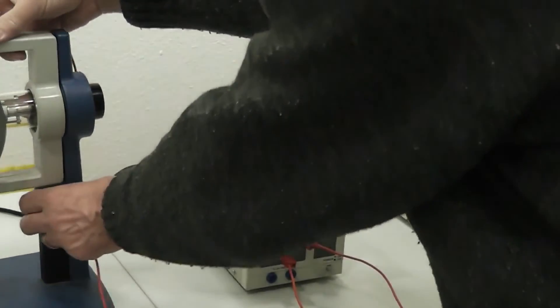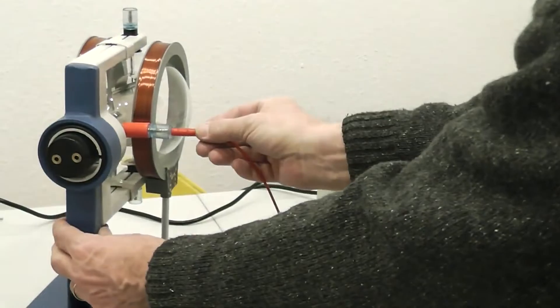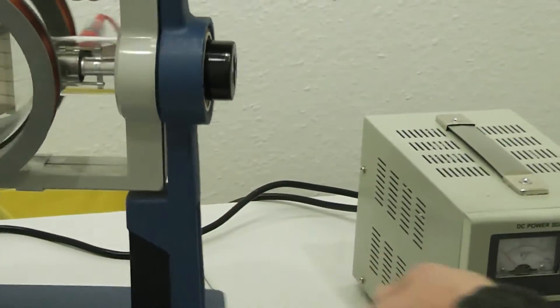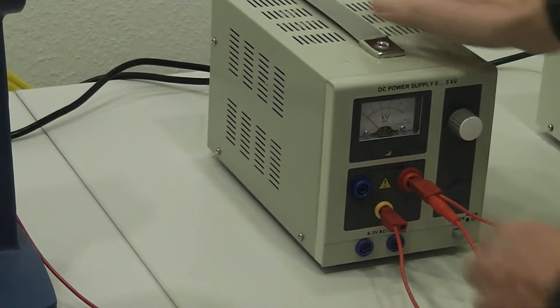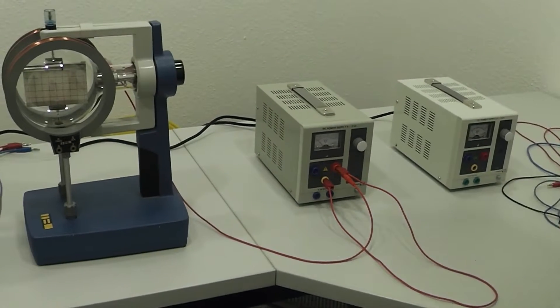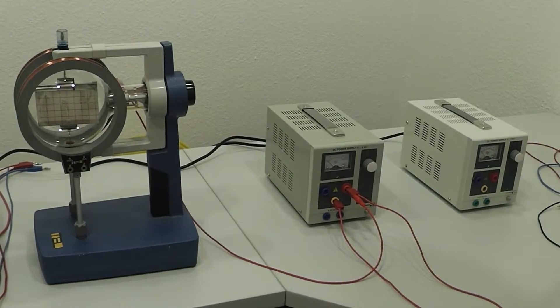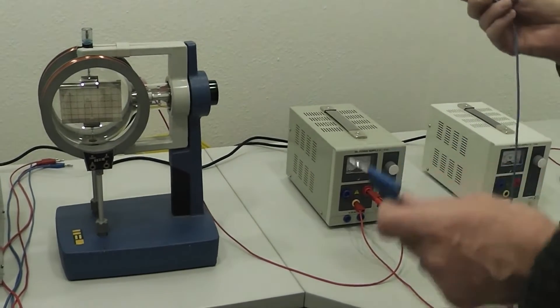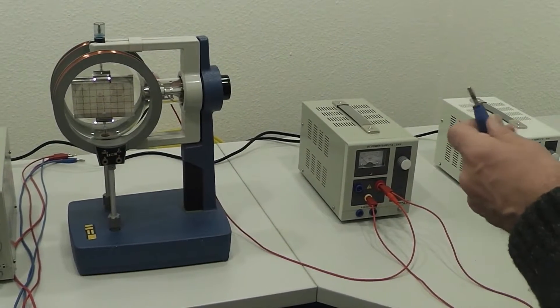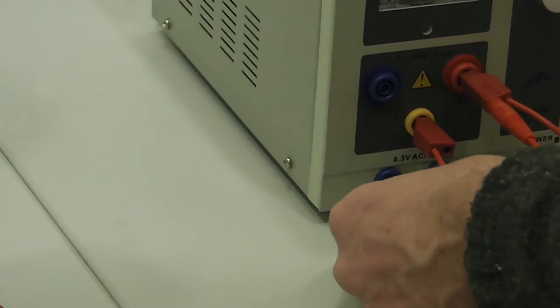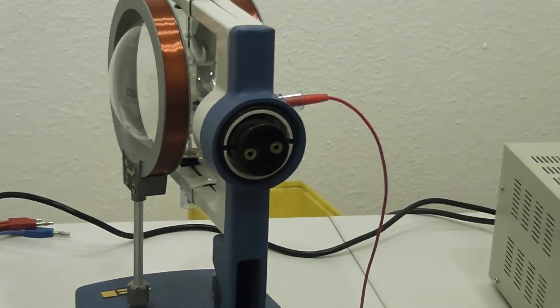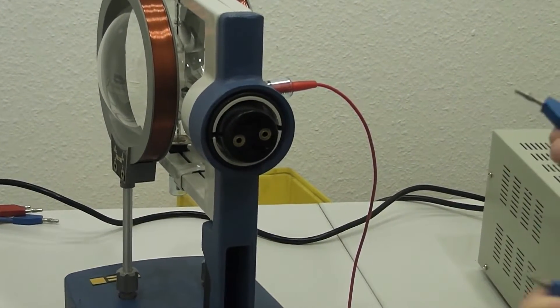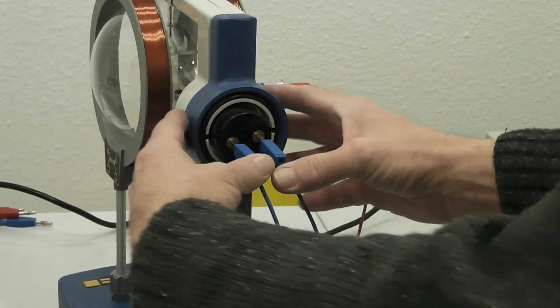Then you connect on the tube the anode and put it on the plus pole. Now we want to connect the filament, the heating of the tube. You take two cords and put them both on the output for 6.3V.